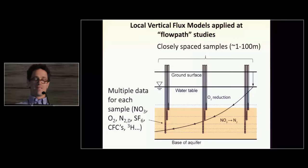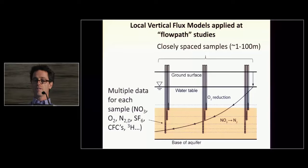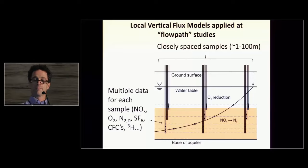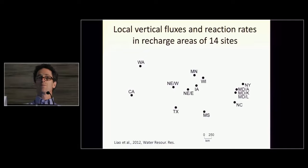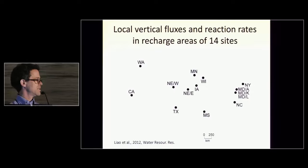Initially, in the first version of this model, we applied it at data-intensive sites where we have closely spaced samples — somewhere between 1 and 100 meters laterally and vertically — where we have clusters of wells and relatively rich data for each well. For example, we might have nitrate, oxygen, excess nitrogen gas from denitrification, and a suite of age tracers for every single sample. This allows us to determine our parameters with some confidence. These are the 14 sites that we worked at initially with the first version of the vertical flux model, published in 2012. This came out of the last Agricultural Groundwater Conference.